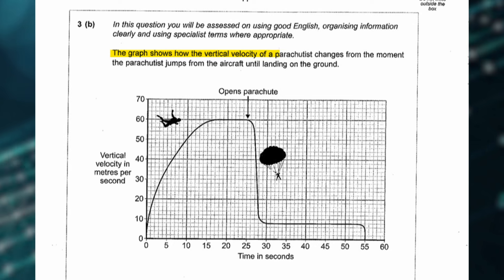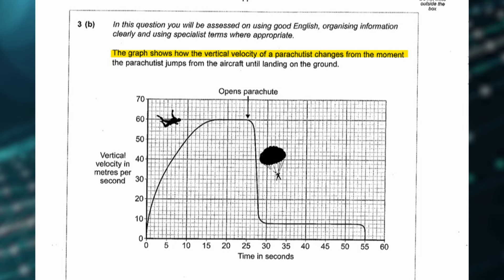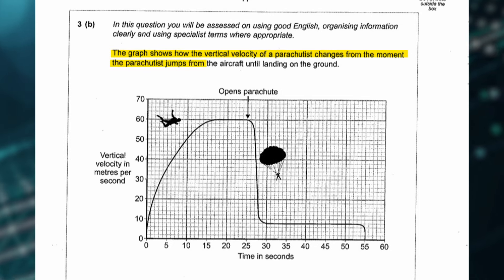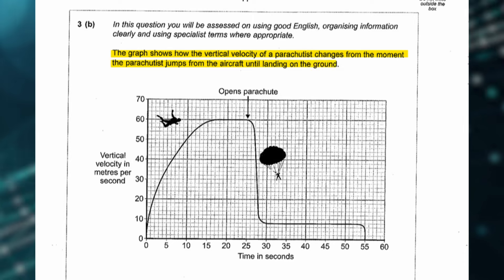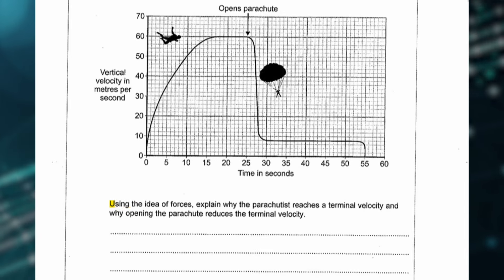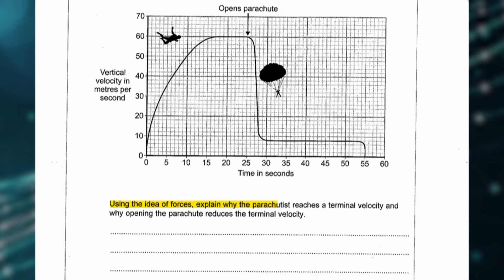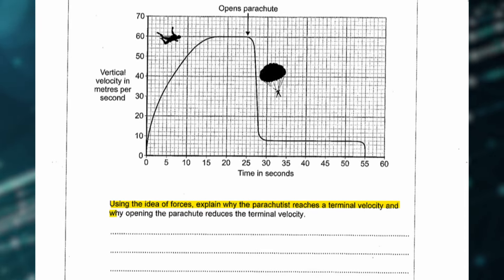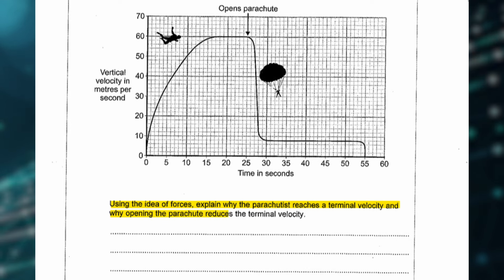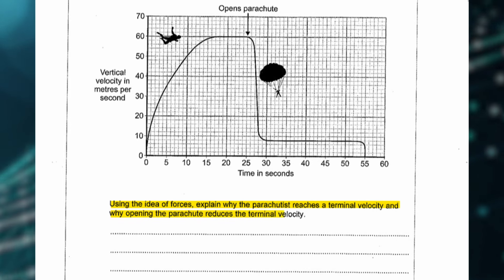The next question states that the graph shows how the vertical velocity of a parachutist changes from the moment the parachutist jumps from the aircraft until landing on the ground. Using the idea of forces, explain why the parachutist reaches a terminal velocity and why opening the parachute reduces the terminal velocity.